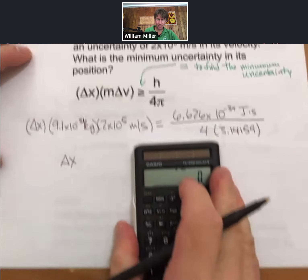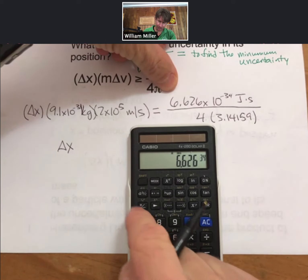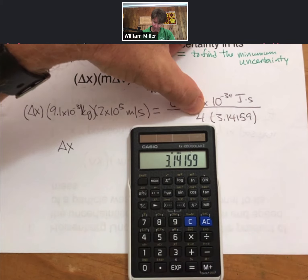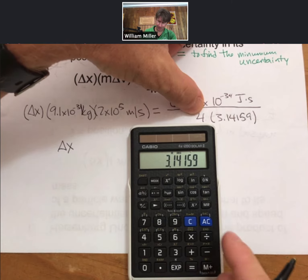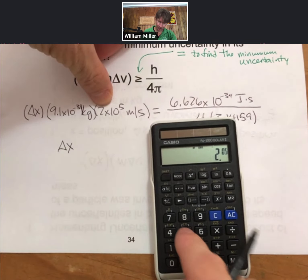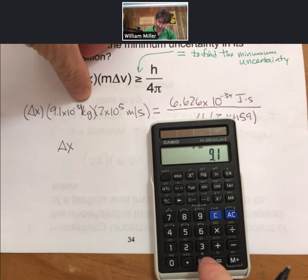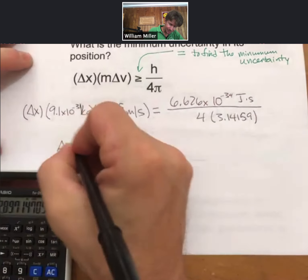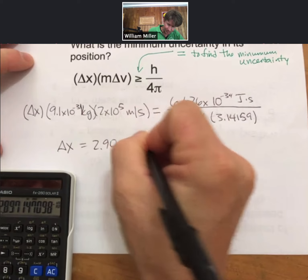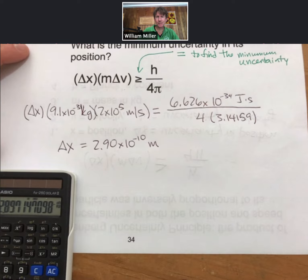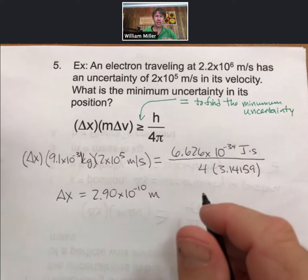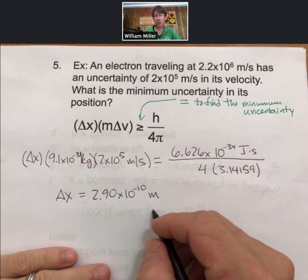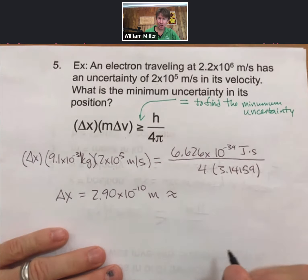Plugging into the calculator: 6.626 times 10 to the minus 34, divided by 4, divided by 3.14159, divided by 2 times 10 to the fifth, divided by 9.1 times 10 to the minus 31. The result is 2.90 times 10 to the minus 10. Checking units, the only units remaining are meters. From our previous calculations, the wavelength of an electron was approximately the size of an atom, and now the uncertainty in position is also approximately the size of the atom.